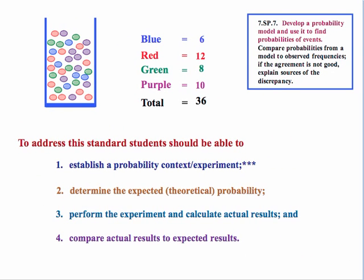In looking at the first part of the standard, develop a probability model and use it to find probabilities of events. So the expectation would be that a student can take a context and establish some type of probability experiment. They can determine the expected or the theoretical probability. They should perform the experiment and calculate the actual results and then compare the two, compare what really happened to what we expected to happen.